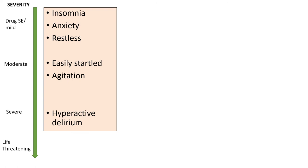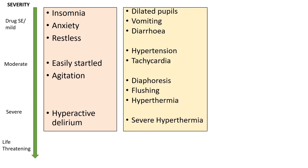For mental status, on the milder side we have insomnia, anxiety, and restlessness. As things progress, the patient becomes more easily startled and agitated, eventually going into full-blown delirium. For autonomic effects: dilated pupils, vomiting, and diarrhoea are quite common — and remember our patient had increased bowel sounds. As things worsen, patients become hypertensive and tachycardic, which can be unstable — blood pressure can be very high and drop quickly.